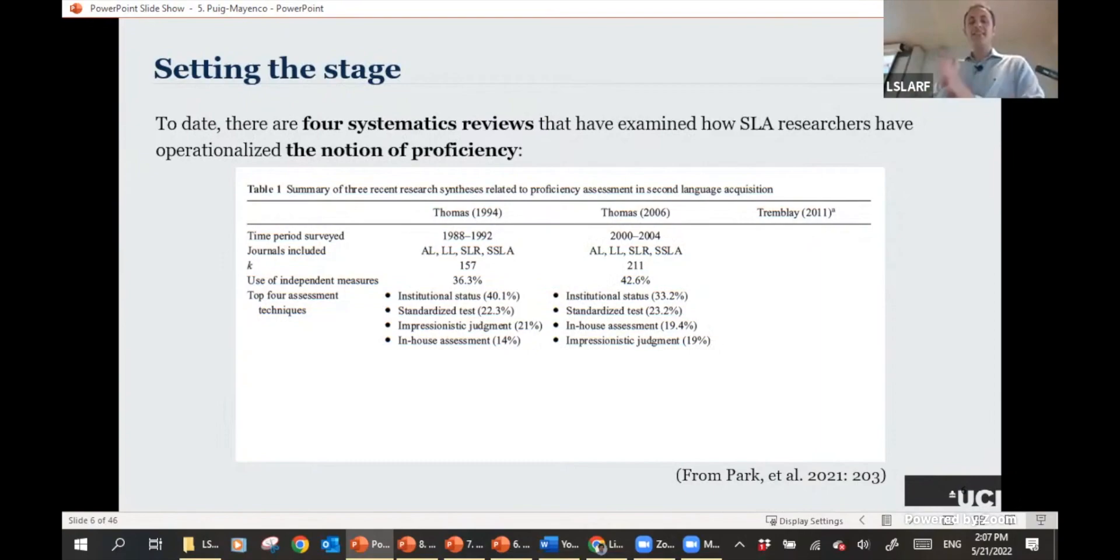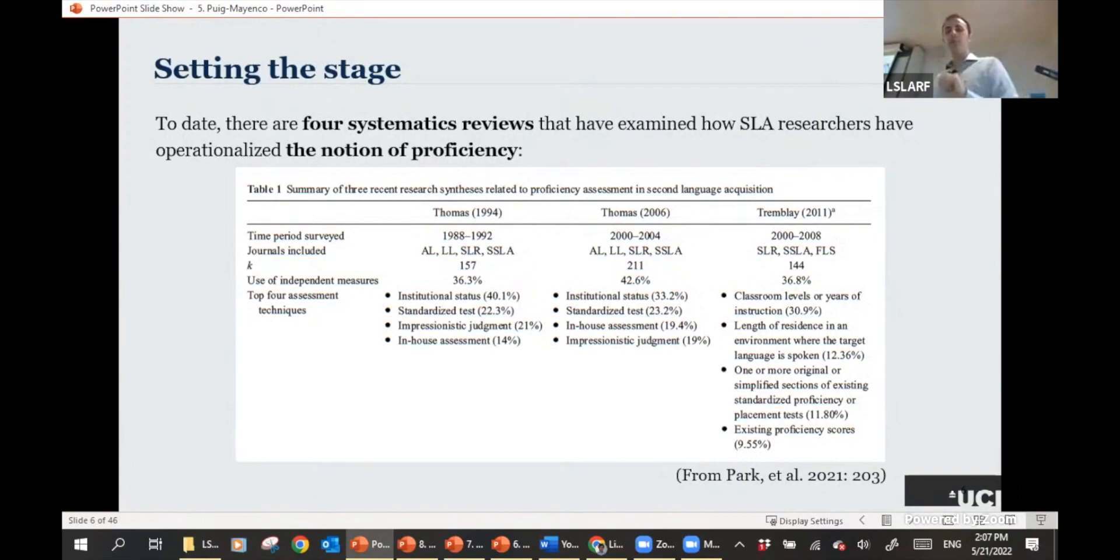Thomas 2006, a kind of follow-up study with similar methodology, found again a similar rate of operationalization of proficiency as an independent measure. We see that they found a rate of 42.6%. Tremblay 2011, in a kind of chronological follow-up, did a similar study, reviewed 144 studies, and found again a similar rate of operationalization of proficiency, 36.8%.